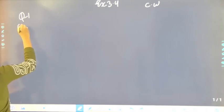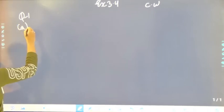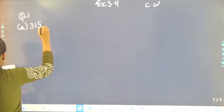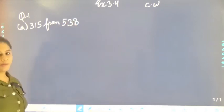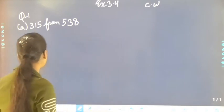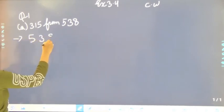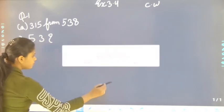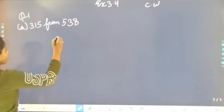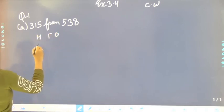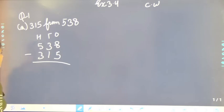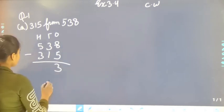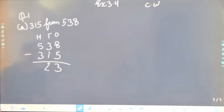First part — 315 from 538. We have to first subtract, then do verification. We write ones, tens, hundreds. Then 538 minus 315. 8 minus 5 is 3, 3 minus 1 is 2, and 5 minus 3 is 2. So the answer is 223.